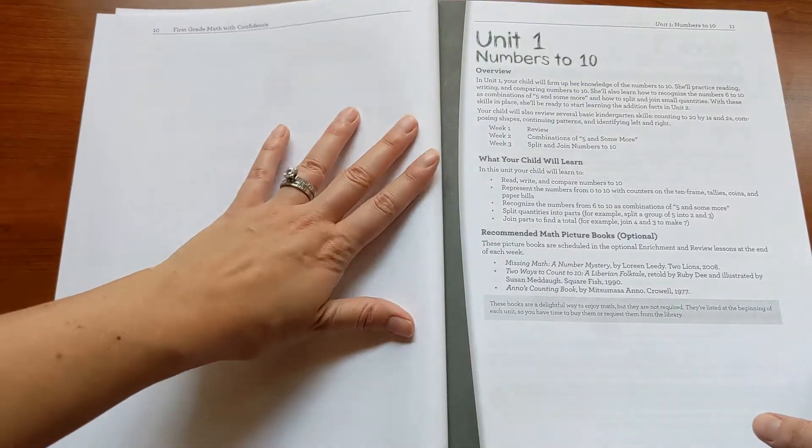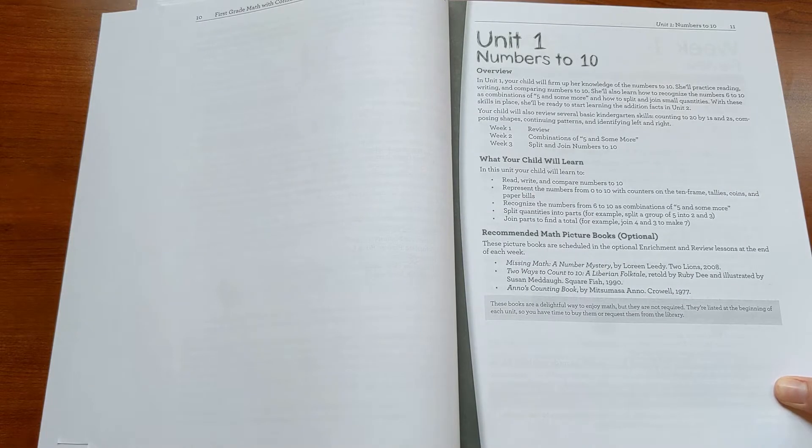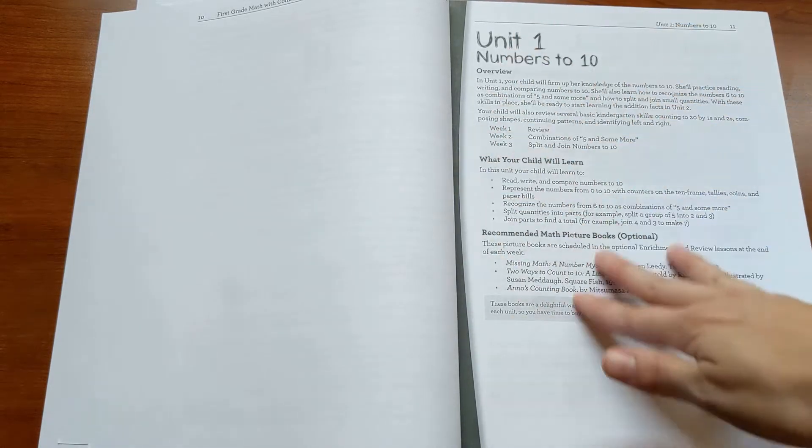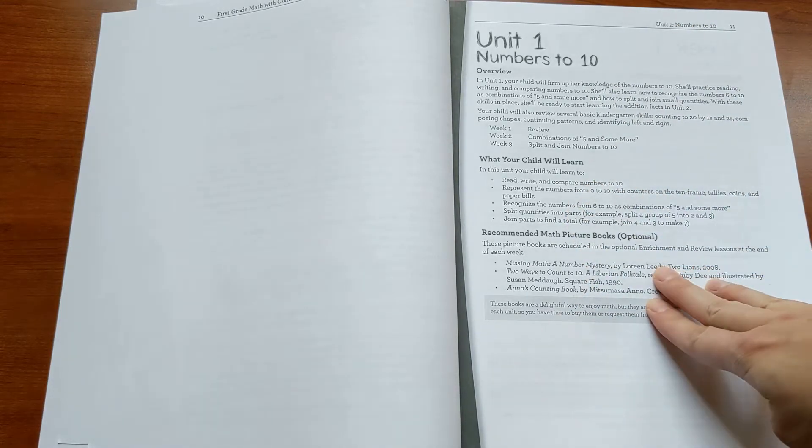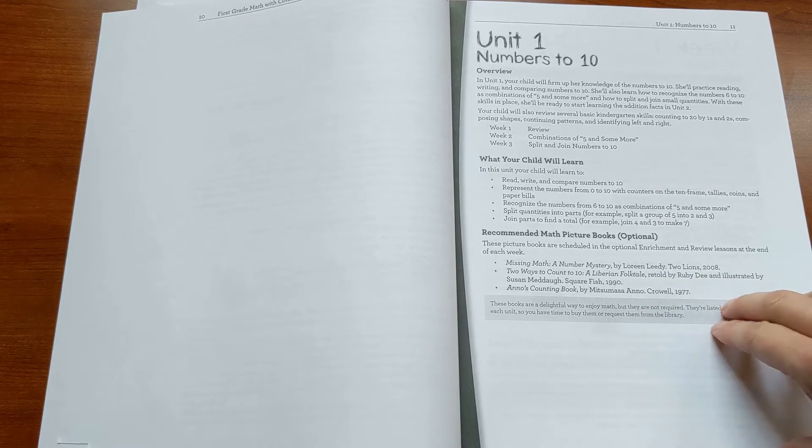So here's unit one, the numbers to ten. Of course your first grader already knows a lot about the numbers to ten, but in here you really set a solid foundation for learning the addition and subtraction facts throughout the year. So the unit overview gives an overview of the unit, what your child will learn, as well as the recommended math picture books that you can use in the enrichment lessons if you would like.